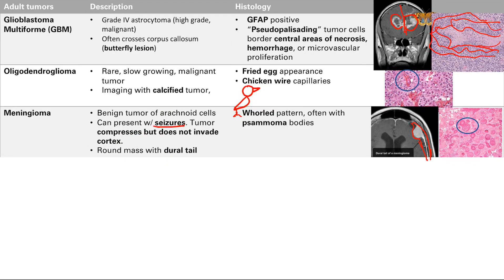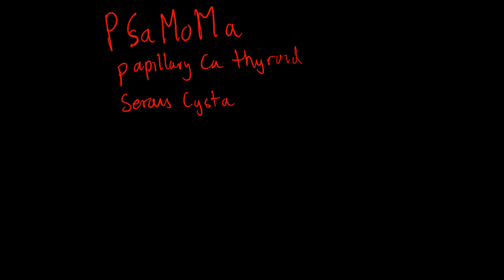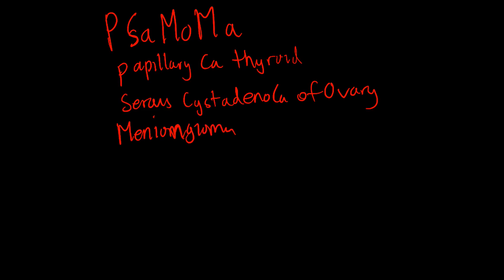Remember the mnemonic for psammoma bodies: MOMA. The first M is for papillary carcinoma of the thyroid, the O is for serous cystadenocarcinoma of the ovary, the second M is for meningioma — which we're talking about — and the A is for mesothelioma.